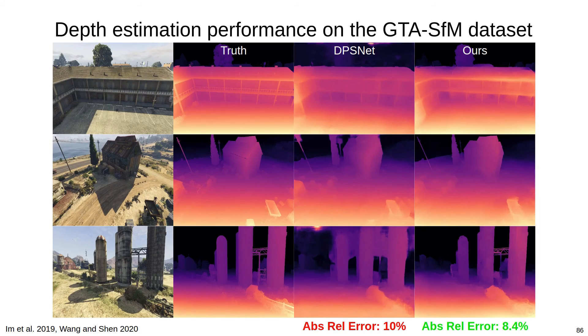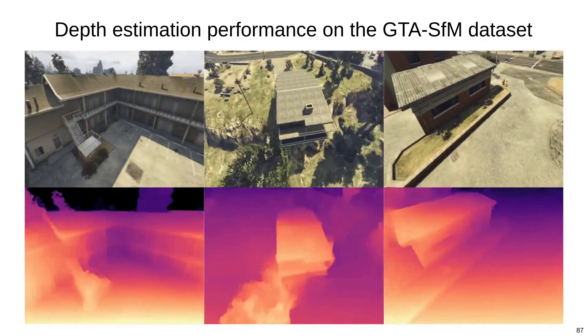DPSNet achieves an absolute relative depth error of 10% on the test set, while we achieve an error of about 8.4%, again, while being order of magnitude faster. And here are some more qualitative results from the dataset.